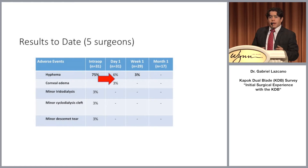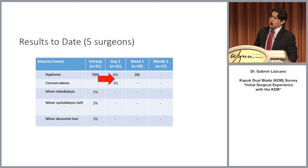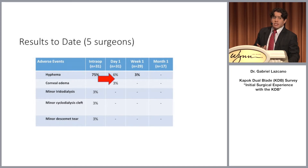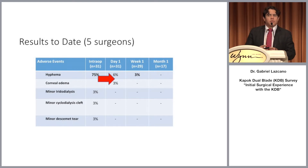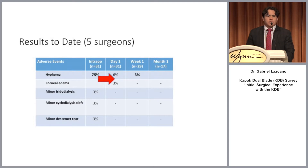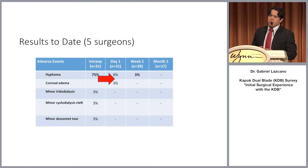We also have a patient with corneal edema associated mainly with the FACO more than with the trabeculotomy, and a patient with a Descemet's detachment that did not require any further treatment. The presence of iridodialysis or cyclodialysis was considered minor because we do not have major complications related to these clefts, such as chronic hypotony. We only have one patient with a transient choroidal detachment that resolved in the first week.